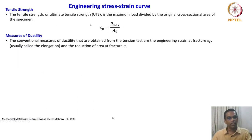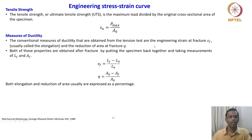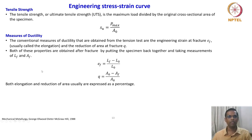We will now talk about the measures of ductility. The conventional measures of ductility obtained from the tension test are the engineering strain at fracture, E_F, usually called elongation, and the reduction of area at fracture, Q. So elongation and reduction in area are the two measures of ductility obtained from the simple tensile test.